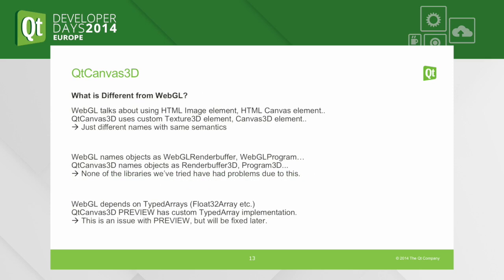What is different from WebGL? WebGL in the spec talks about HTML image elements and HTML canvas elements — Qt Canvas doesn't have those; we have a custom Texture3D element and a Canvas3D element instead. These are essentially different names with mostly the same semantics. WebGL also names objects like WebGLRenderBuffer and WebGLProgram — we name them RenderBuffer3D and Program3D. This is just to avoid using the Khronos trademark of WebGL in our APIs since we are not conformant. None of the libraries we've tried have had any problems because of this.